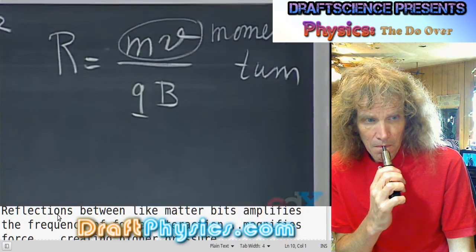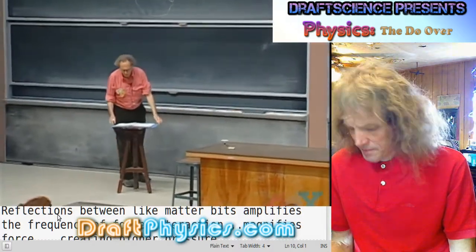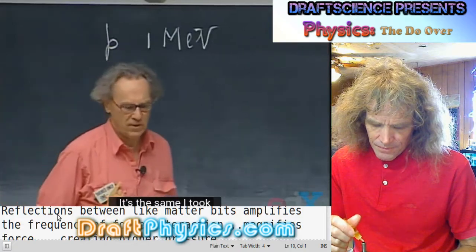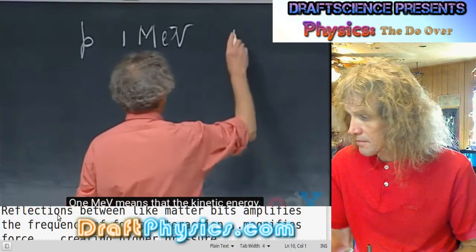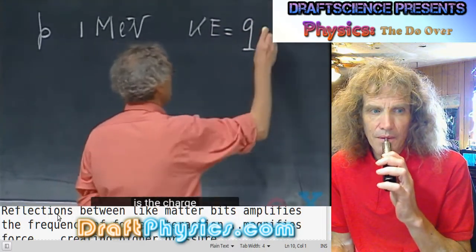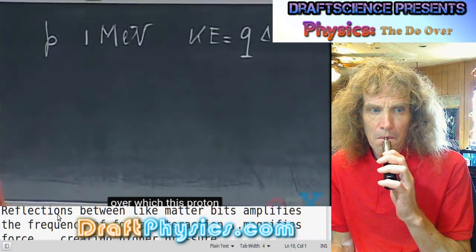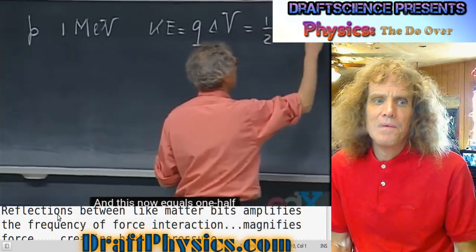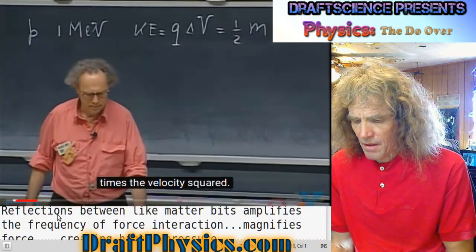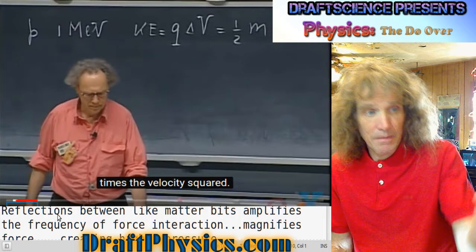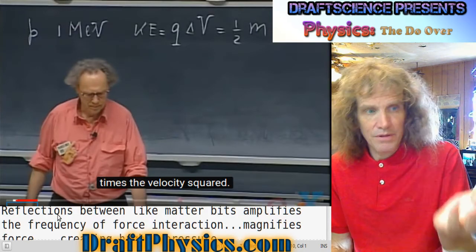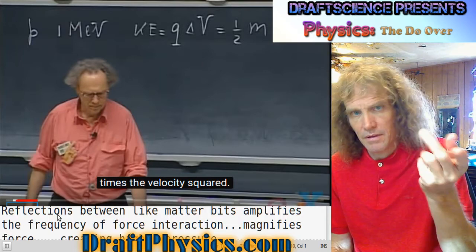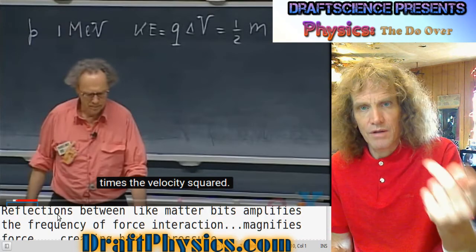Let's do a numerical example. I take a proton — P stands for proton — and I take a 1 MeV proton. 1 MeV means the kinetic energy is 1 MeV, which is the charge times the potential difference over which this proton was accelerated; delta V would be 1 million volts. This equals one-half times the mass of the proton times the velocity squared. So like an electron gun, if you could make a proton gun, you're just reversing the charge essentially — the cathode and anode are reversed.